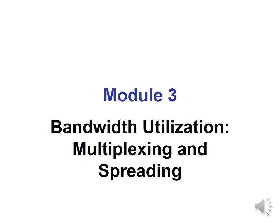Hello everyone. In this section I will be explaining bandwidth utilization, multiplexing and spectrum. What is the meaning of multiplexing? Whenever the bandwidth of a medium linking two devices is greater than the bandwidth needs of those two devices, the link can be shared. Multiplexing is a set of techniques that allows the simultaneous transmission of multiple signals across a single data link.